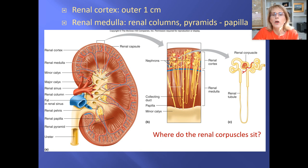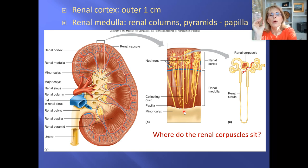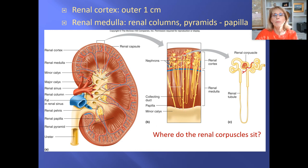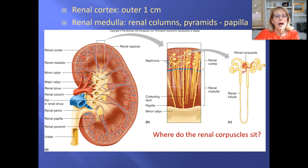From the distal convoluted tubule — which is technically the last part of a nephron — the fluid goes through the collecting duct, where more refinement of the fluid about to become urine occurs. The collecting duct meets another tube at the renal papilla, and what drips out into a minor calyx will be urine. A minor calyx is a little collecting vessel.